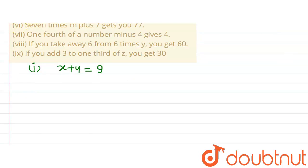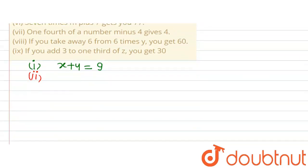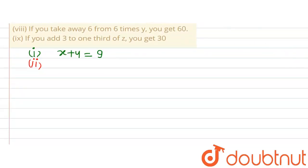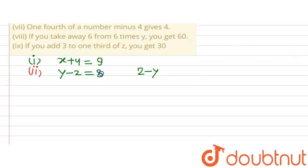In the second part, the difference between y and 2 is 8. When we write the difference between y and 2, it can be written in two ways: either subtract 2 from y, or subtract y from 2. Both equal 8, so there are two possible equations: y - 2 = 8 or 2 - y = 8.